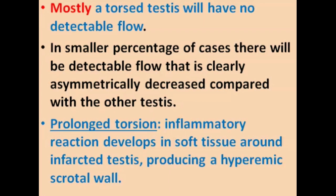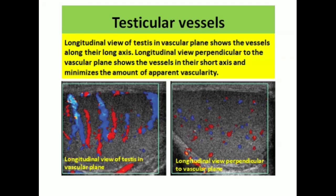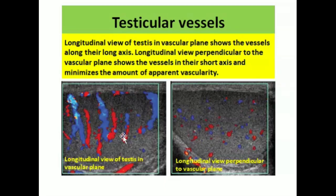Prolonged torsion will produce inflammatory changes in soft tissue around the infarcted testis, and therefore will produce a hyperemic scrotal wall. These are the testicular vessels. The longitudinal view of the testis shows the vascular plane, while the longitudinal view perpendicular to the vascular plane is different. Therefore, before labeling a testis as torsion or normal, we should compare findings with respect to these vascular planes.